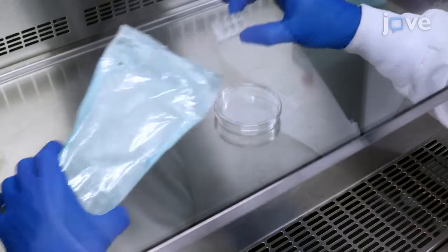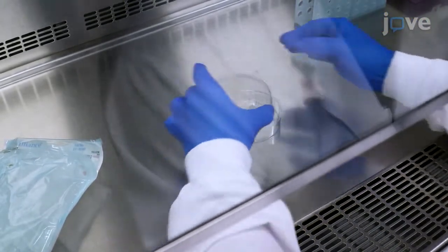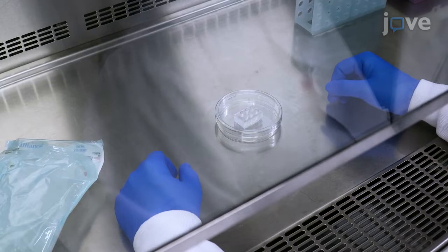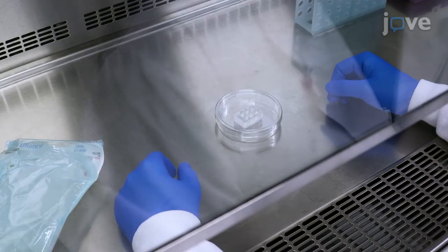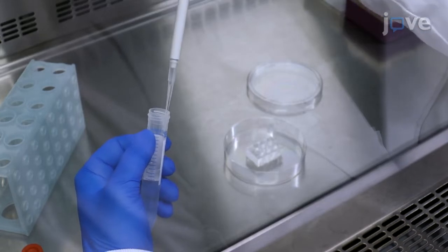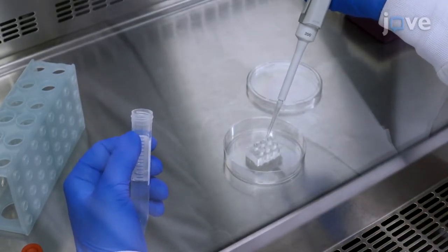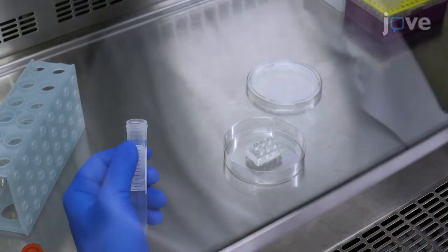Two to three hours before cell seeding, place a six-well myotactic plate portion into a 10-centimeter cell culture dish. Prepare each individual myotactic culture well by adding 100 microliters of a 5% pleuronic F127 solution.